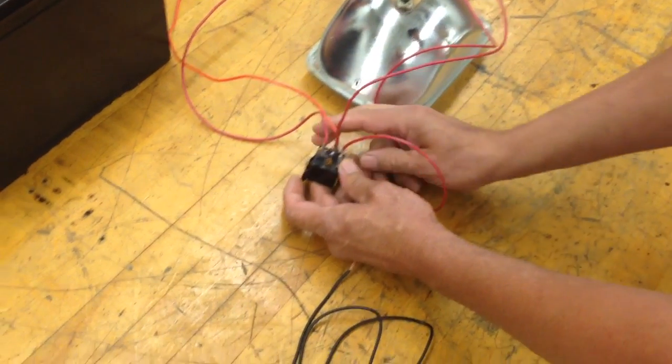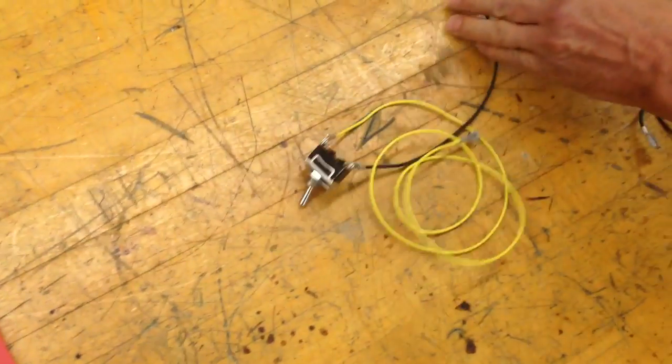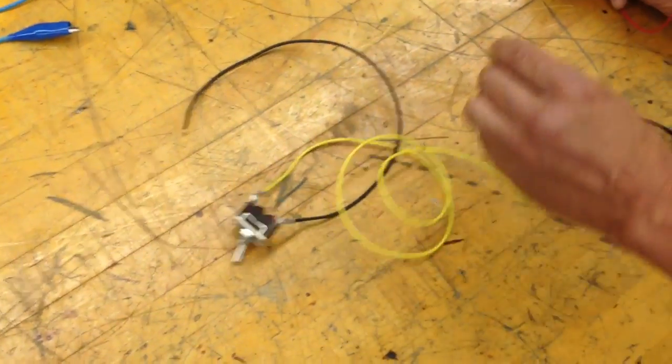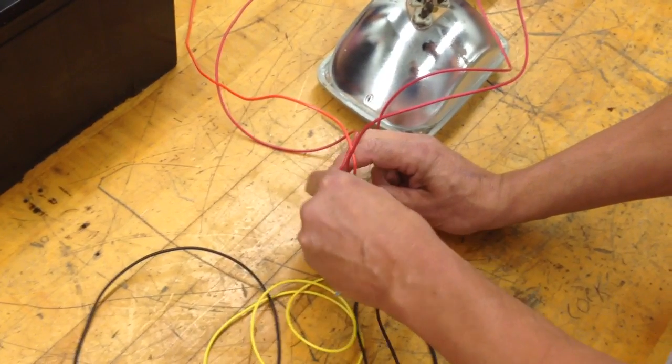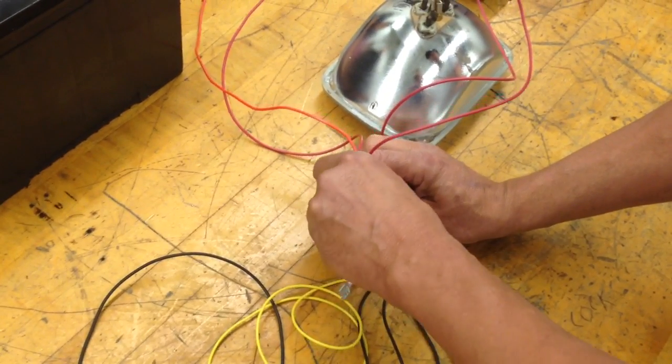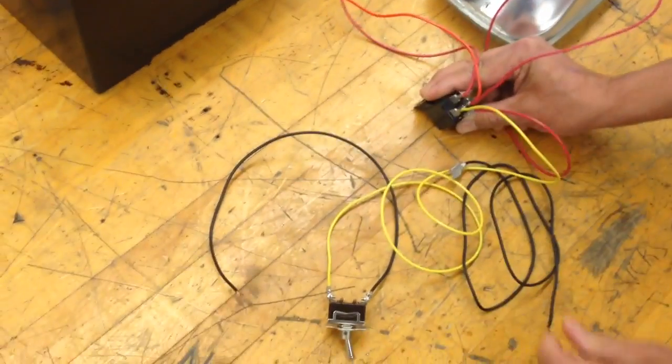Then from there, we're going to take the switch, which is here. We're going to connect the yellow wire to pin 85 on the relay, and we're going to connect that ground wire in a second.